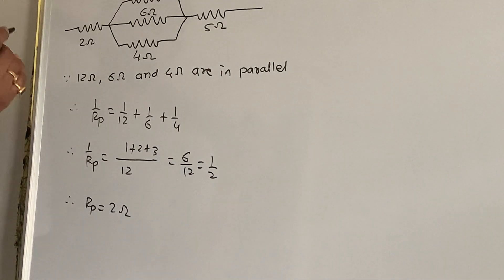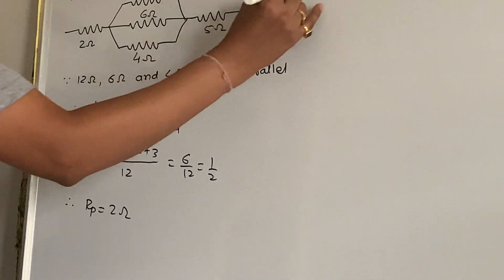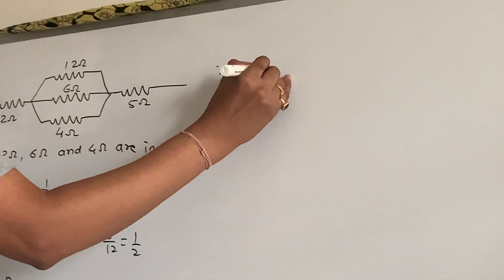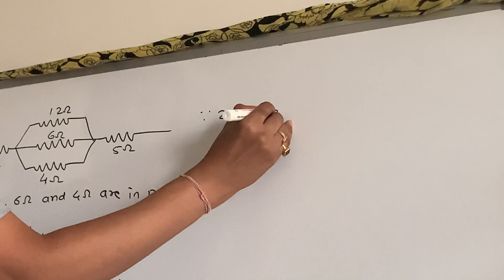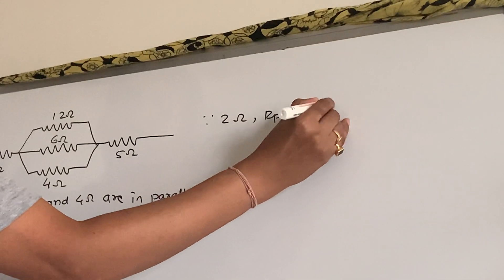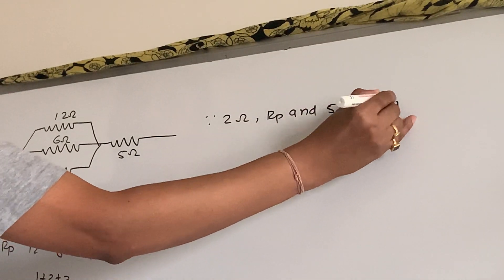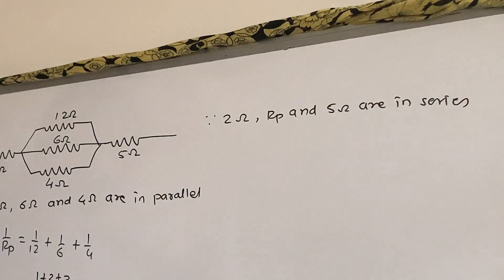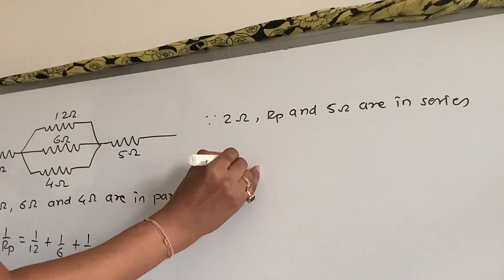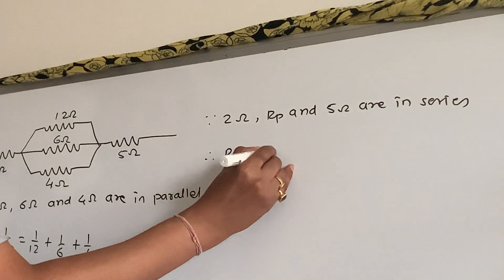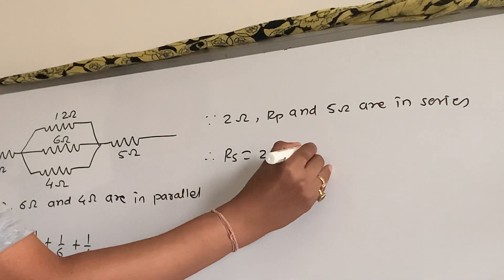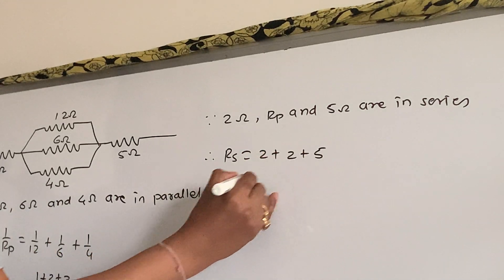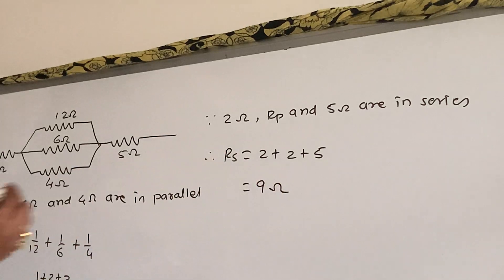Now since Rp and 5 ohm are in series, Rs = 2 + 2 + 5 = 9 ohm. That is the answer for question 16.